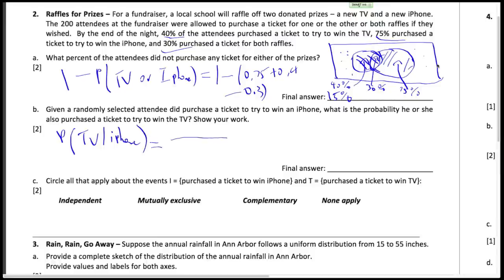So again, we're going to say the probability, right? So this is the probability that someone got a TV in the universe where they already got an iPhone. So what's the probability of the universe? It's just the probability that they got an iPhone. And what's the probability that in this universe they also got a TV? Right, so the probability of a TV and iPhone.